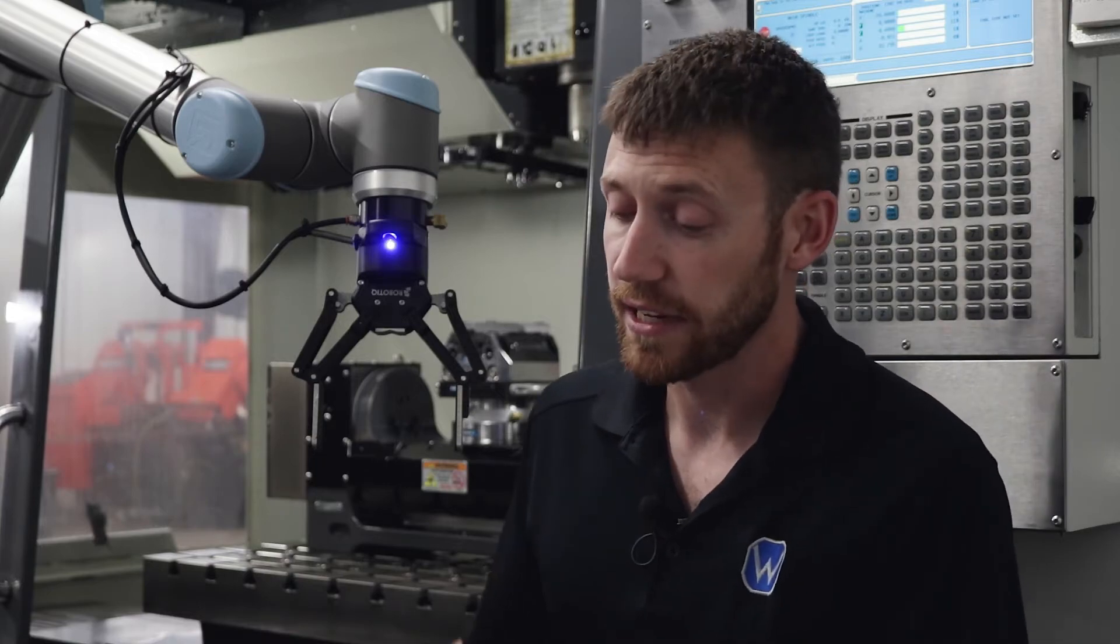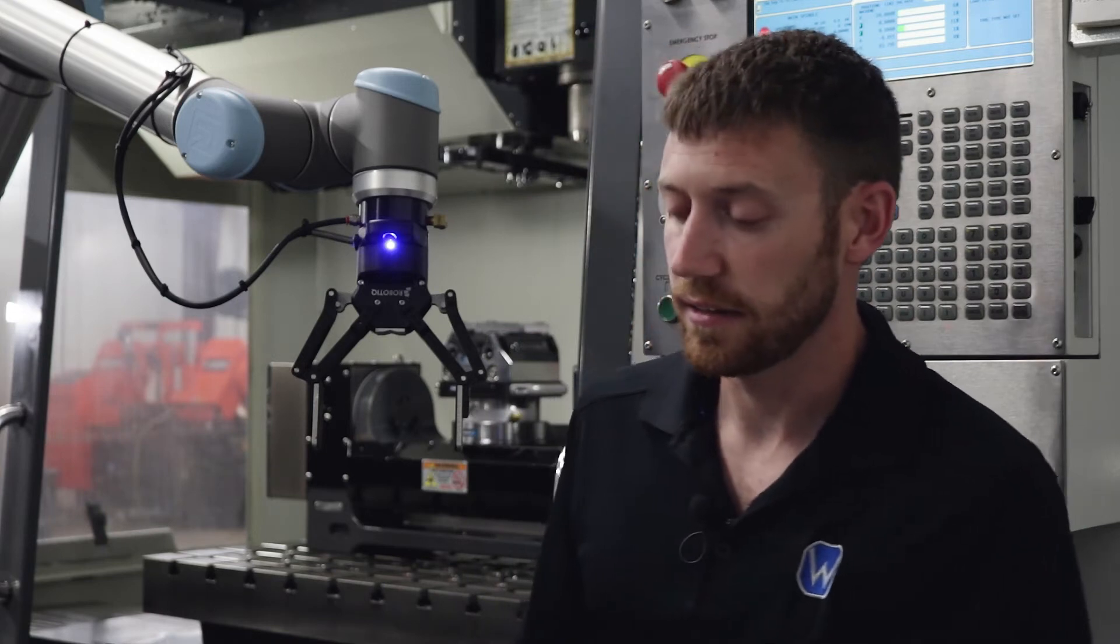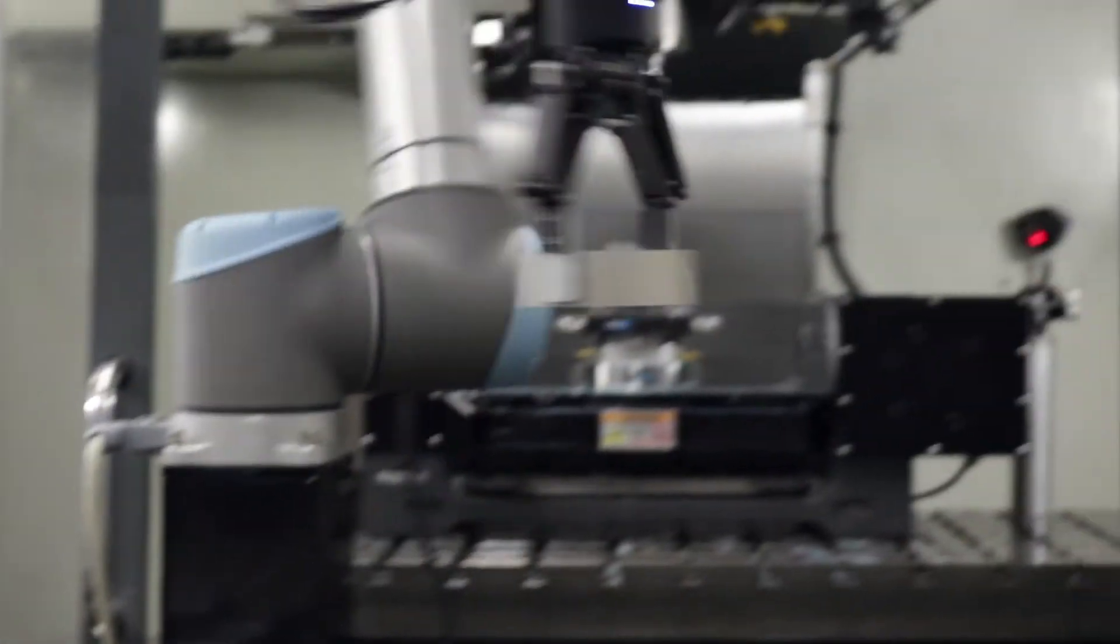Then for more accurate picking, it's going to get closer and take another snapshot of one of those parts that it wants to pick. It'll reach down, pick it, rotate and set it in the automatic vice over here.